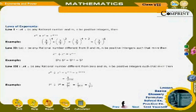Laws of Exponents. Law 1: Let x be any rational number and m and n be positive integers. Then x^n × x^m = x^(m+n). Example: (2/3)⁴ × (2/3)² = (2/3)^(4+2) = (2/3)⁶.